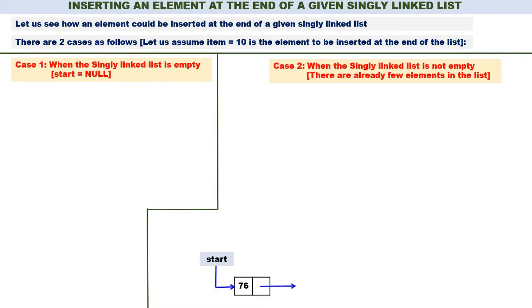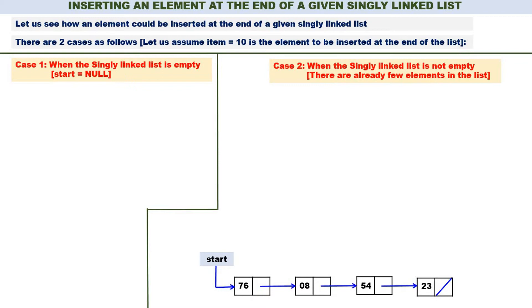When start is not equal to null, there should be a linked list. This is the linked list: 76, 08, 54, 23 — the existing linked list. Start is containing the address of the first node. Start is not equal to null; it is containing the address of 76.